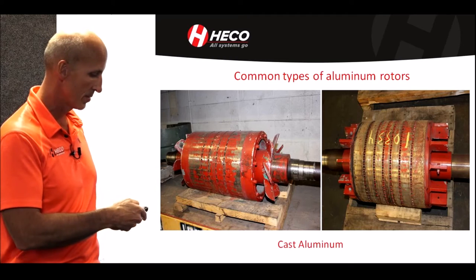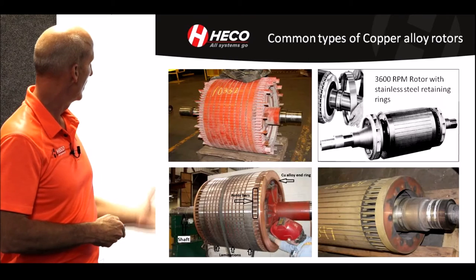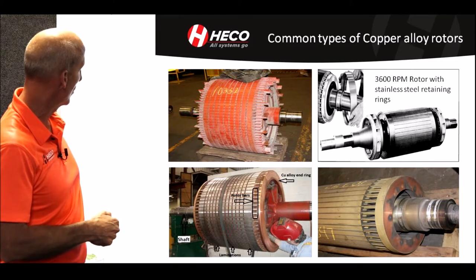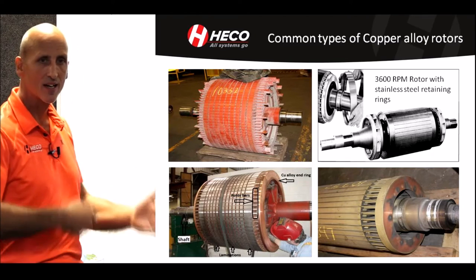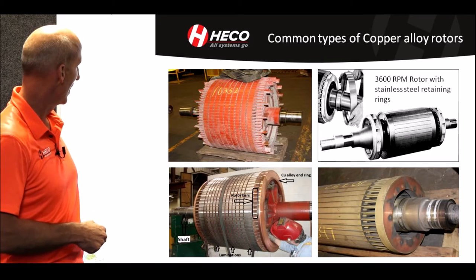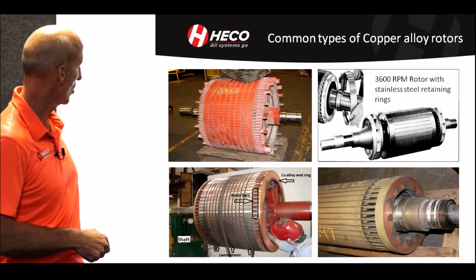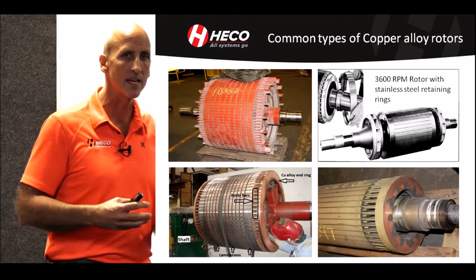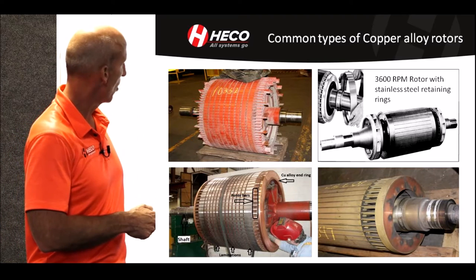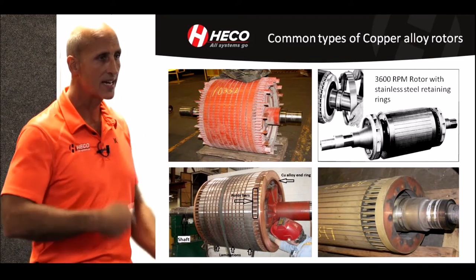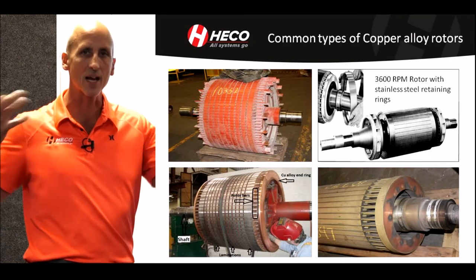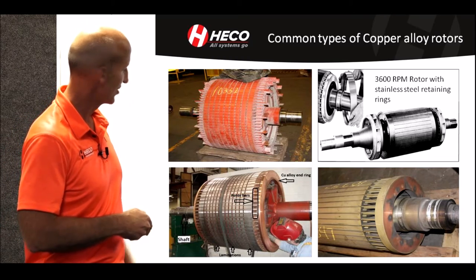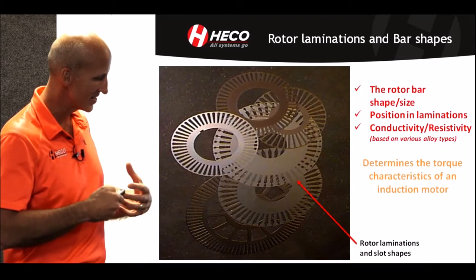Common aluminum rotors — cast aluminum in this case. Common copper alloy rotors. You'll have rotor designs where the bars are staggered out of the slot, allowing for some airflow acting like a fan. This is actually a 5,000 horsepower rotor. Then you have a 3,600 RPM rotor — a whole other beast that rotates at higher speed. Most of those designs require some form of a retaining ring to hold the shorting ring from flying apart due to centrifugal forces.